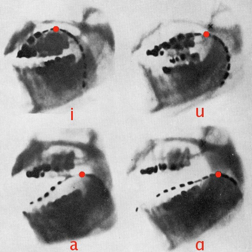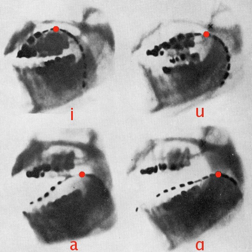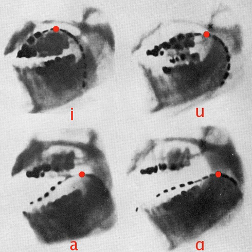Co-articulated consonants are sounds that involve two simultaneous places of articulation, pronounced using two parts of the vocal tract. In English, the W in 'went' is a co-articulated consonant, being pronounced by rounding the lips and raising the back of the tongue.